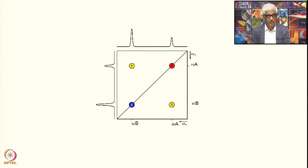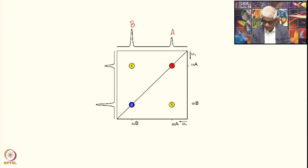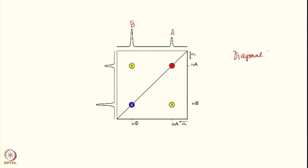This is just a two-spin system schematically indicated with two lines — one line for the A spin and another for the B spin. In the two-dimensional experiment, the spectrum looks like this schematically. You have the so-called A peak, which has the same frequency along the omega 1 axis and the omega 2 axis — omega A here and omega A here. Similarly, this peak has omega B here and omega B here. These are called the diagonal peaks. The diagonal essentially represents the one-dimensional spectrum.